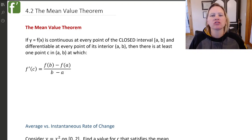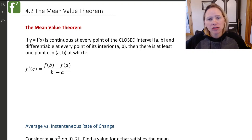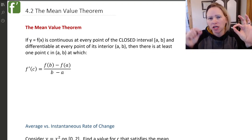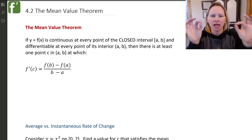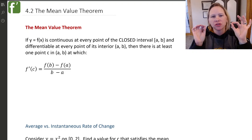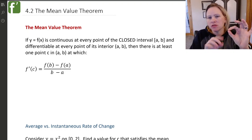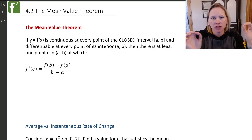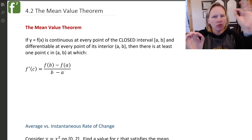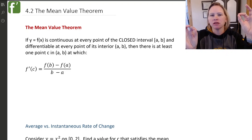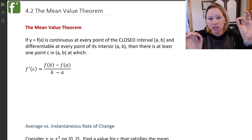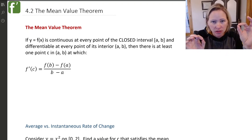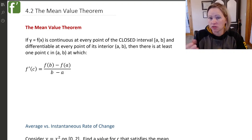The mean value theorem essentially says this: if we have a function where we look at a closed interval from point A to point B, and on that interval our function is both continuous and differentiable — meaning you can find the derivatives, there are no discontinuities, no sharp corners on the graph — then we know it's continuous, because differentiability implies continuity.